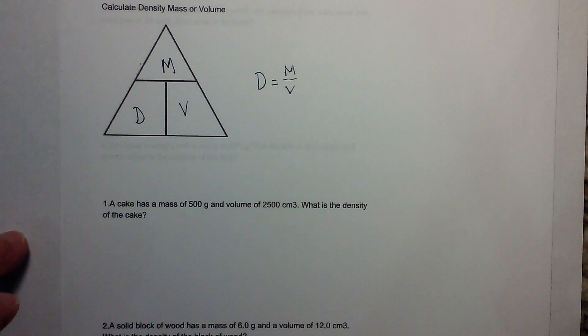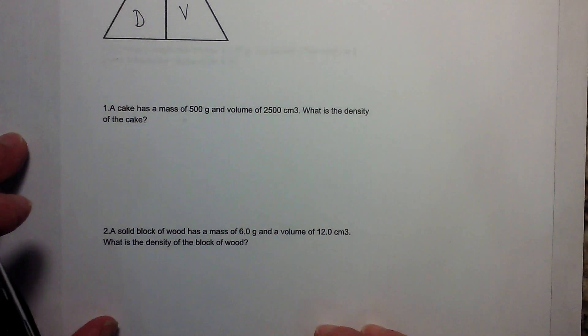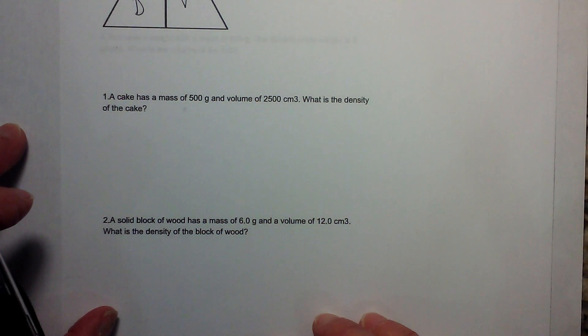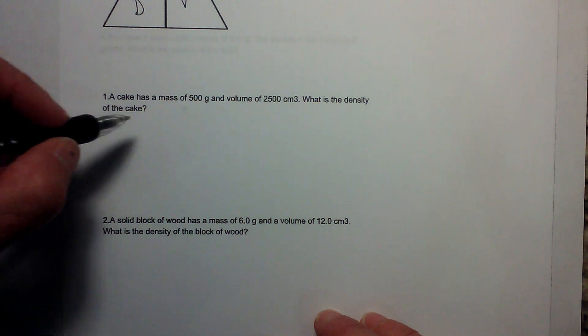The first example is: a cake has a mass of 500 grams and volume of 2500 centimeters cubed. What is the density of the cake?